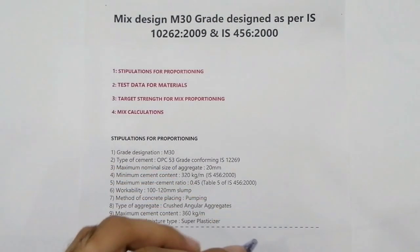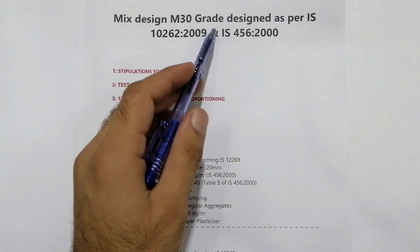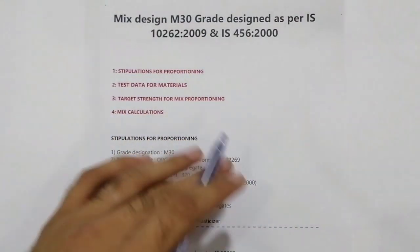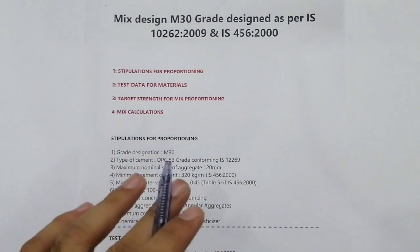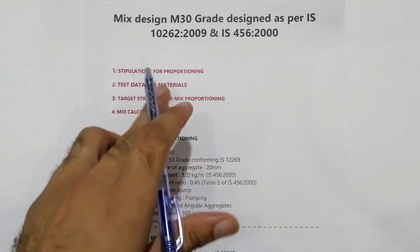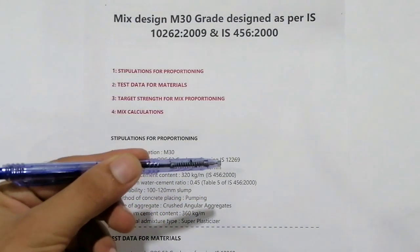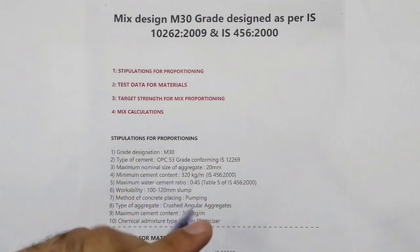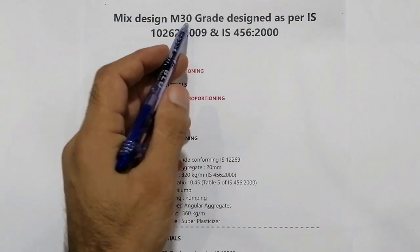Bismillah ar-rahman ar-rahim, assalamu alaikum. In this important video lecture I'm going to talk about mix design M30 grade, designed as per IS 10262:2009 and IS 456:2000. This topic is very important because there is general information about M30 grade concrete. If this video is helpful, please like the video and subscribe the channel for more civil engineering updates.